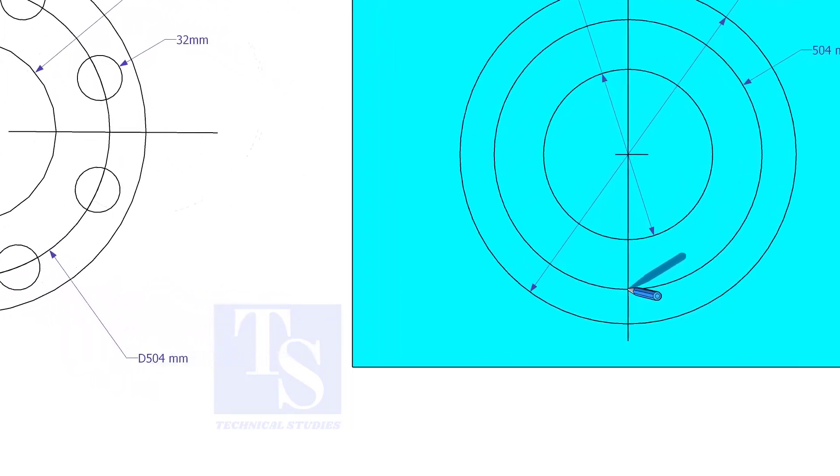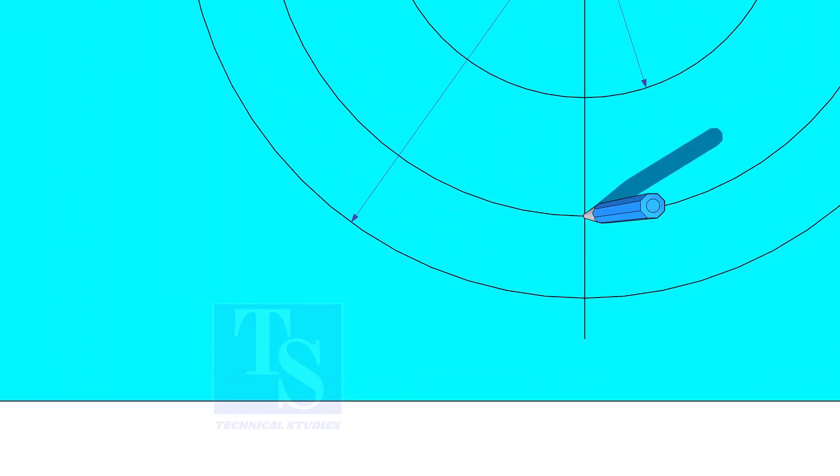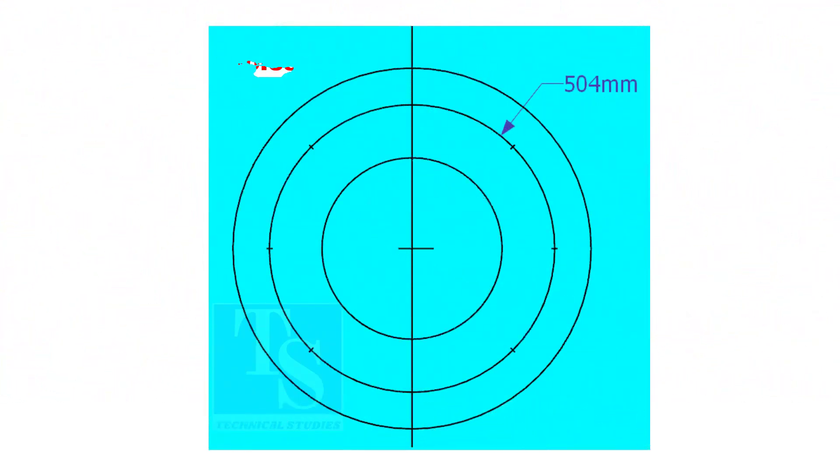Punch mark where the PCD circle cuts the center line. Since the number of holes is 8, divide the PCD into 8 equal parts.